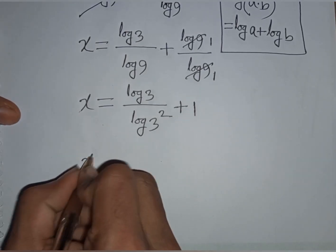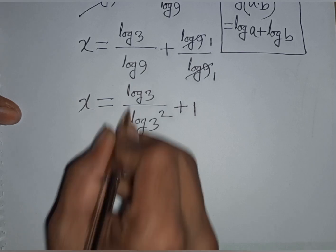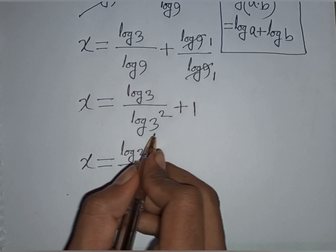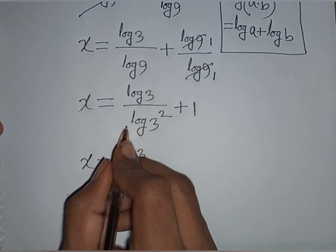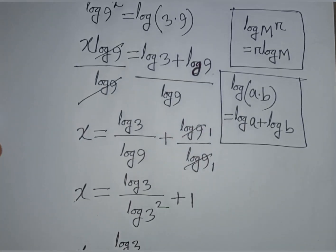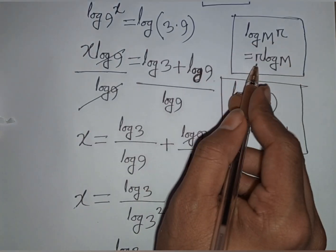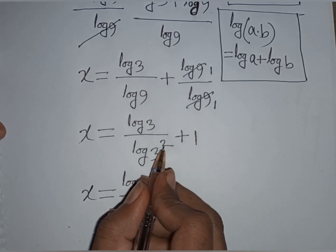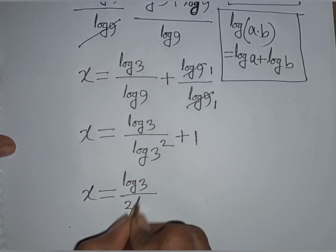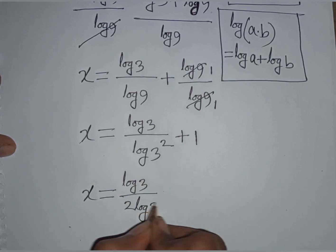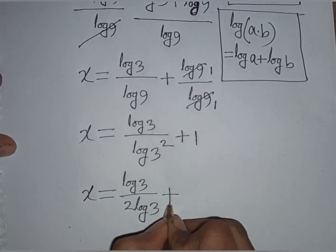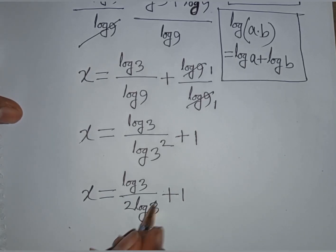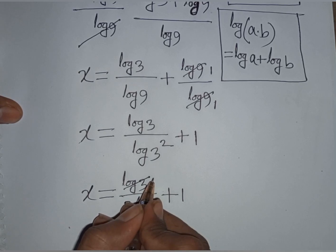So x is equal to log 3 over log 3 power 2. According to the rule log m power r equals r log m, this power 2 moves to the base, giving log 3 over 2 log 3. Then plus 1. We see this log 3 and this log 3 will be cancelled, leaving 1 over 2.